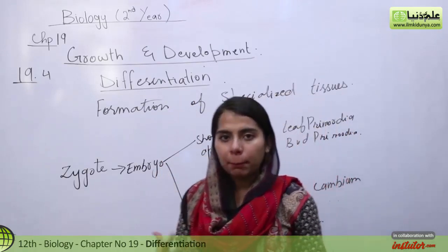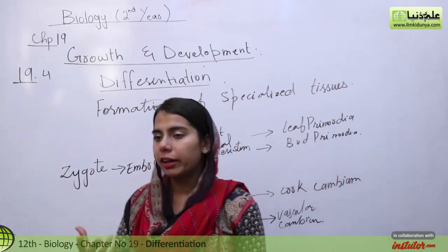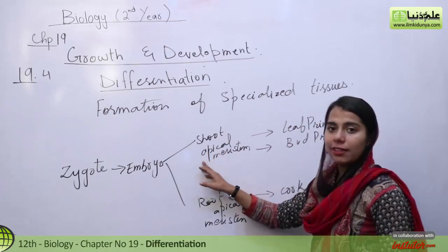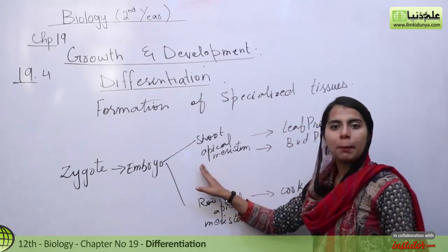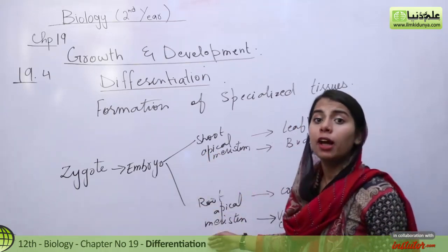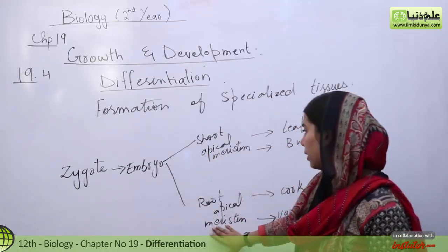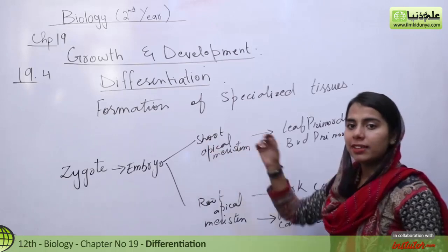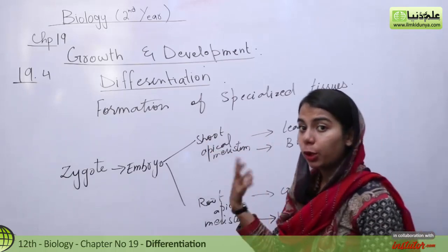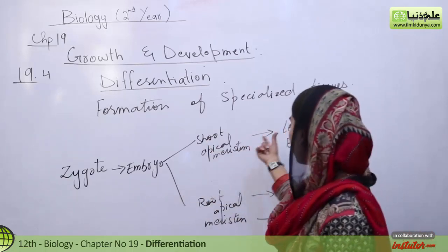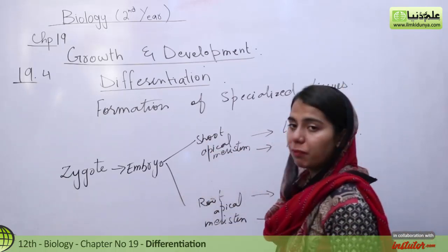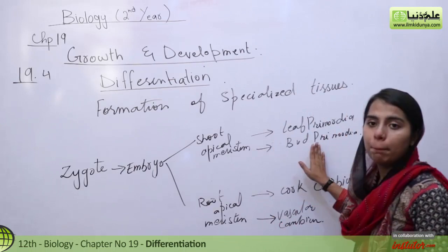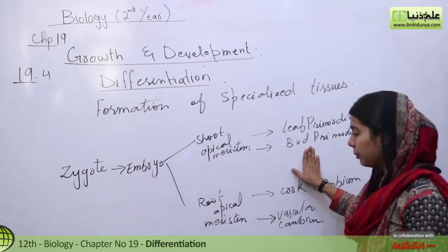In further development, there are two types of meristems: one is known as shoot apical meristem and the other is root apical meristem. From the shoot apical meristem, further growth occurs and leaf primordia and bud primordia are formed.